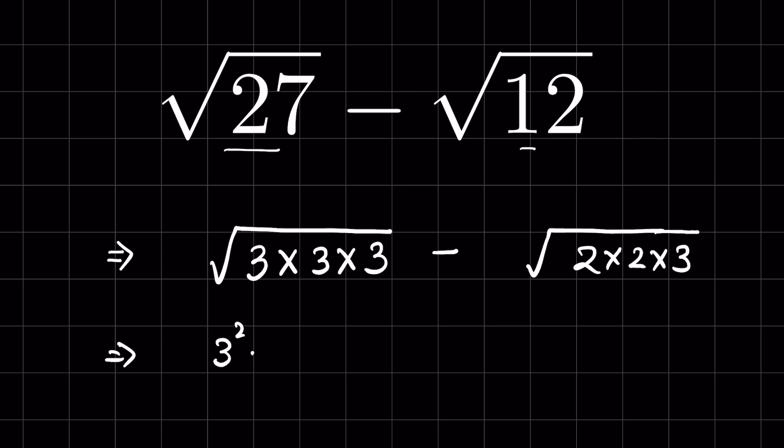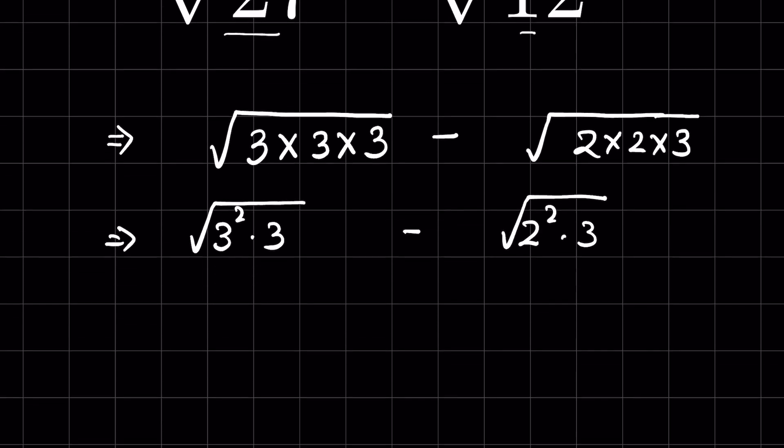Now this is 3 square times 3 under square root minus 2 square times 3 under square root.